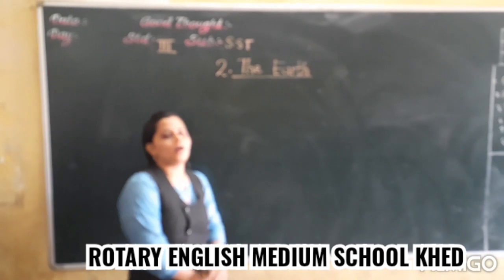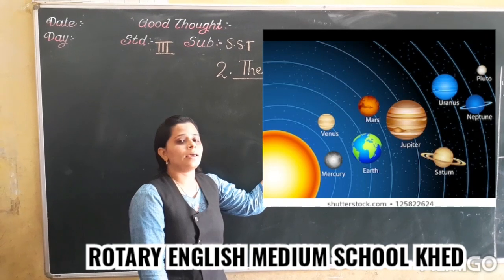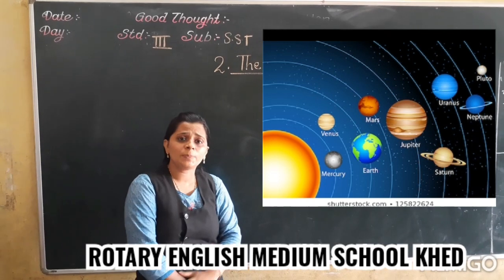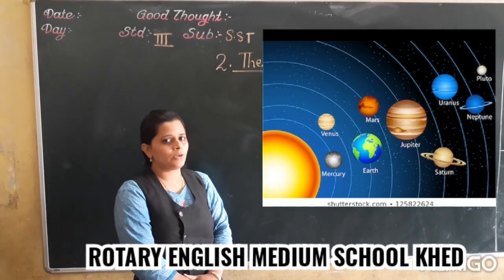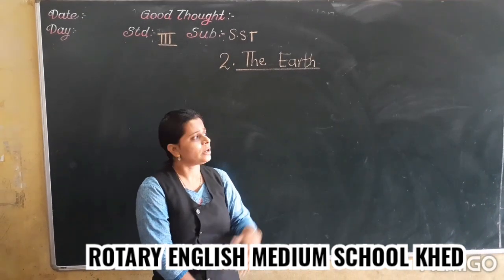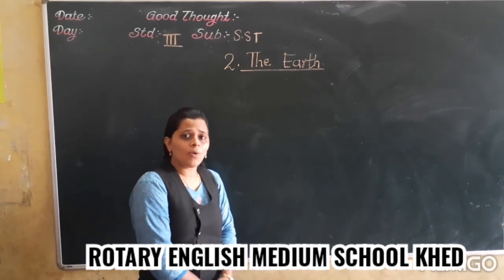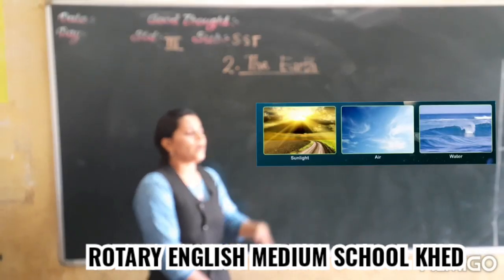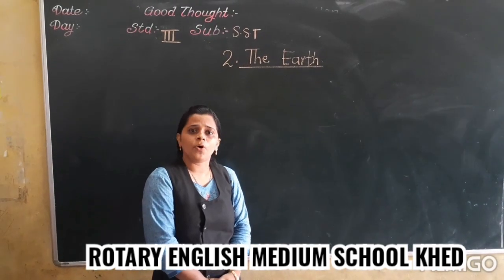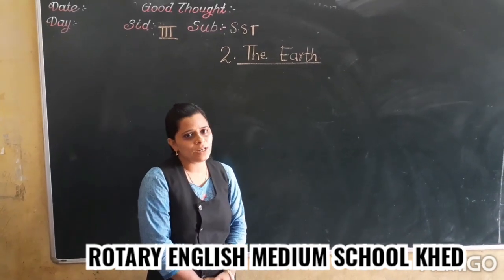Now let's talk about the Earth. As you all know, in our solar system there are 8 planets. Out of 8 planets, which planet do we live on? We live on Earth. Now my dear children, why do we live on Earth and not on the other 7 planets? There are some reasons behind it. Our Earth has the presence of air, water, and sunlight, which are required for living. That's why our Earth is known as a unique planet.